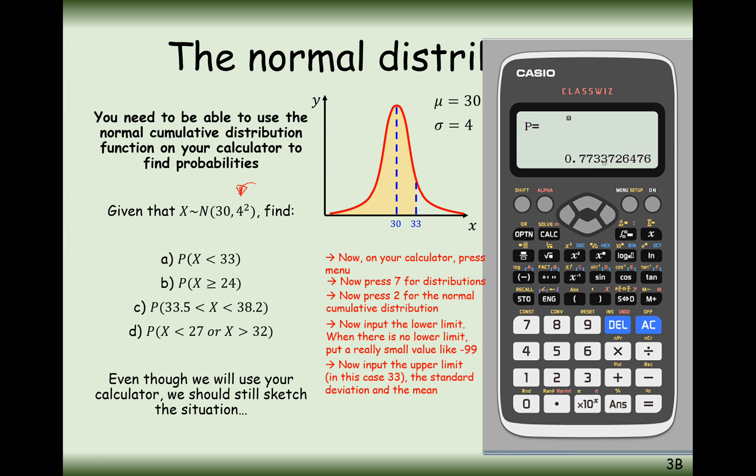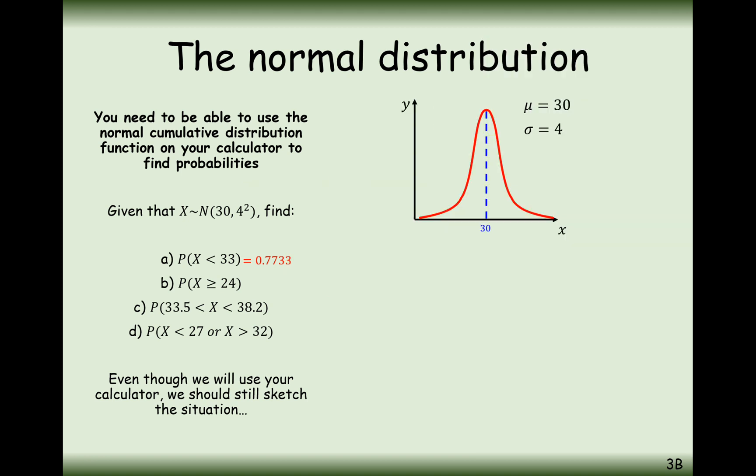Then we hit enter and get our answer: 0.77337, or 0.773 to 3 significant figures. The normal CD mode works out a probability between two given boundaries. If you want to work out a less than probability, use a really low lower boundary. Or if you want a greater than probability, use a really high upper boundary.